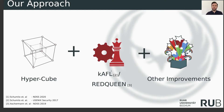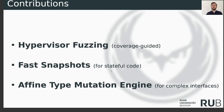Our design and implementation — we made the following contributions. To the best of our knowledge, this is the very first coverage-guided hypervisor fuzzer for unmodified targets, so you don't have to recompile things. We also built a fast snapshot mechanism for very stable code like hypervisors, so we can recover a predefined state after each fuzzing iteration. And we also use an affine-type mutation engine which expects a specification of the target, and using this engine we're able to fuzz complex targets or interfaces.